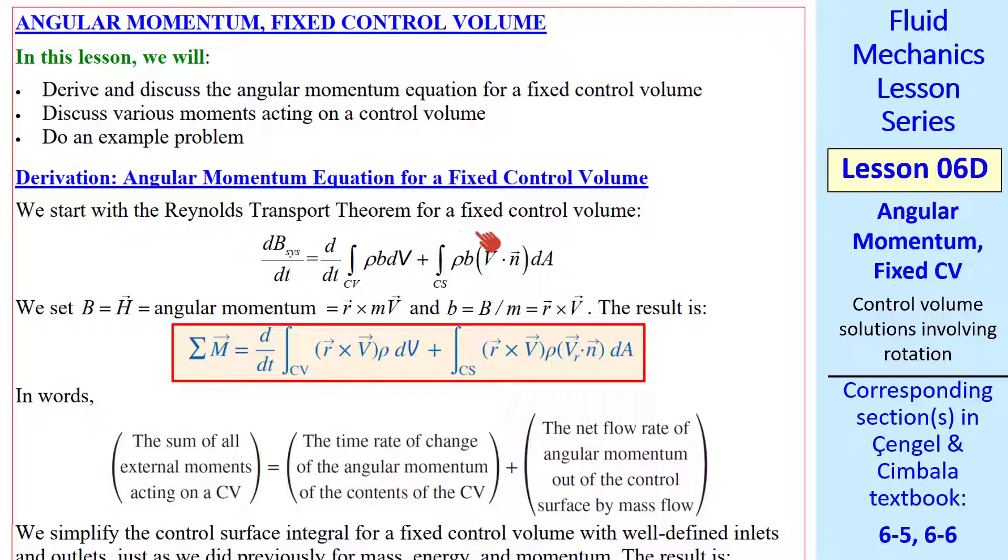we start with the Reynolds Transport Theorem for a fixed control volume. Remember, this is our link between the system and the control volume. Here we let capital B be H, the angular momentum vector, which is some moment arm R cross product with MV, where V is the velocity vector. Little b is always B over M, so that's just R cross V.